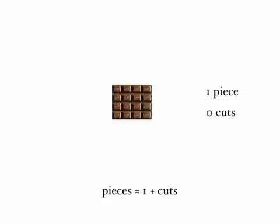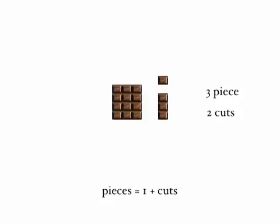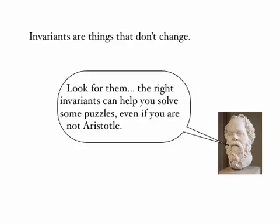Let's start the problem again but cut it differently. The invariant noted is: pieces equals one plus cuts. One piece, zero cuts; two pieces, one cut; three pieces, two cuts. We're cutting differently to before, but the number of pieces is still one plus the number of cuts — four pieces, three cuts, and so on. It didn't change. Have a go at answering the chocolate cutting problem on your own. Remember, invariants are things that don't change, and sometimes they can help us solve problems — even if we're not Aristotle. Thanks for watching.